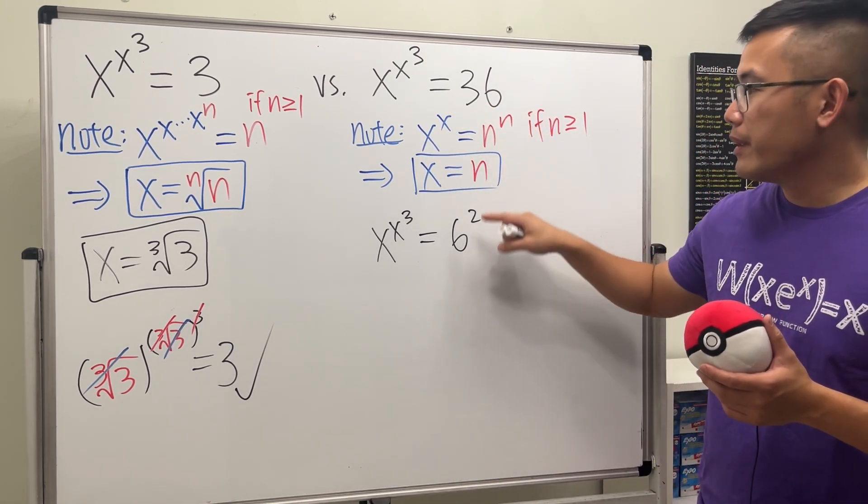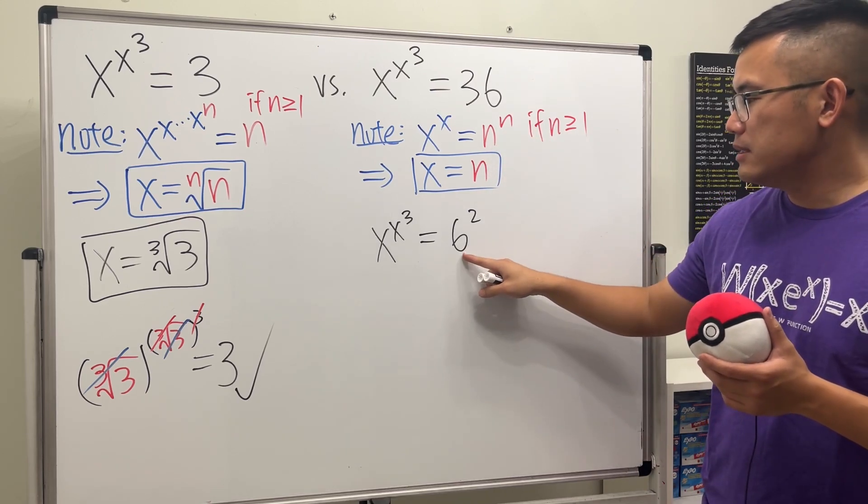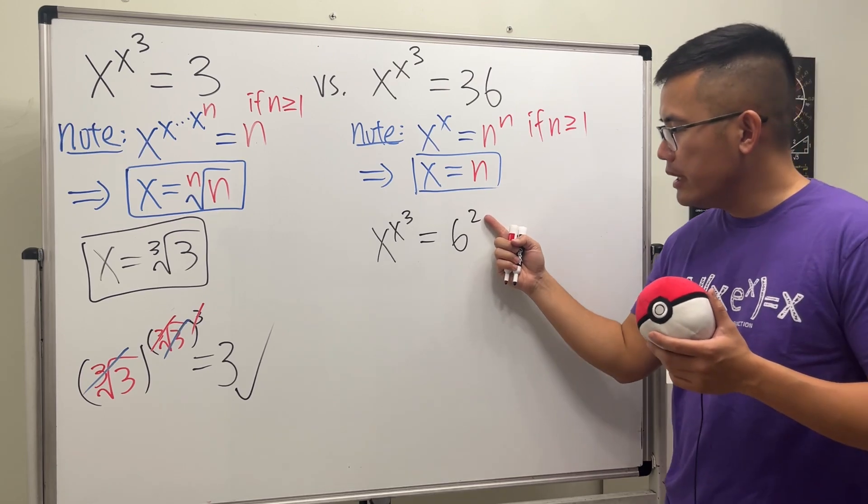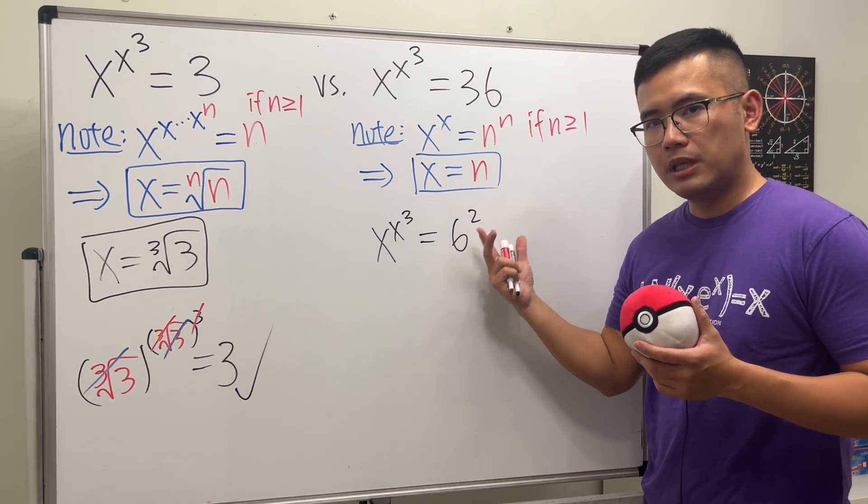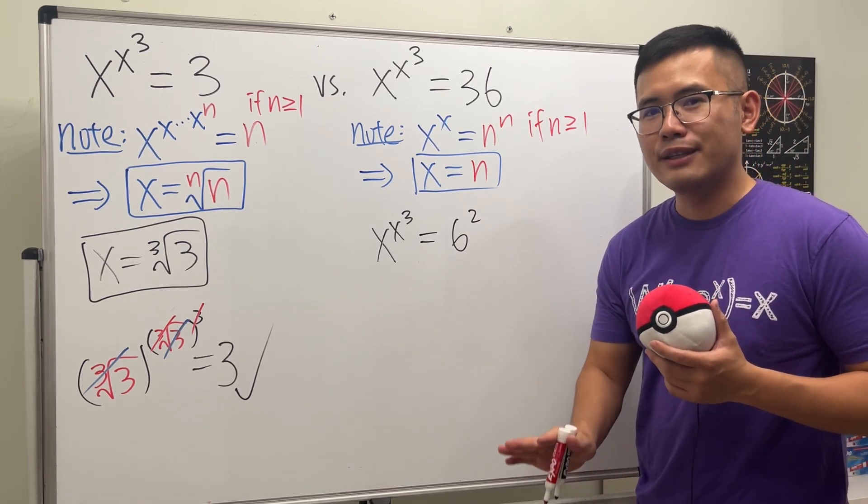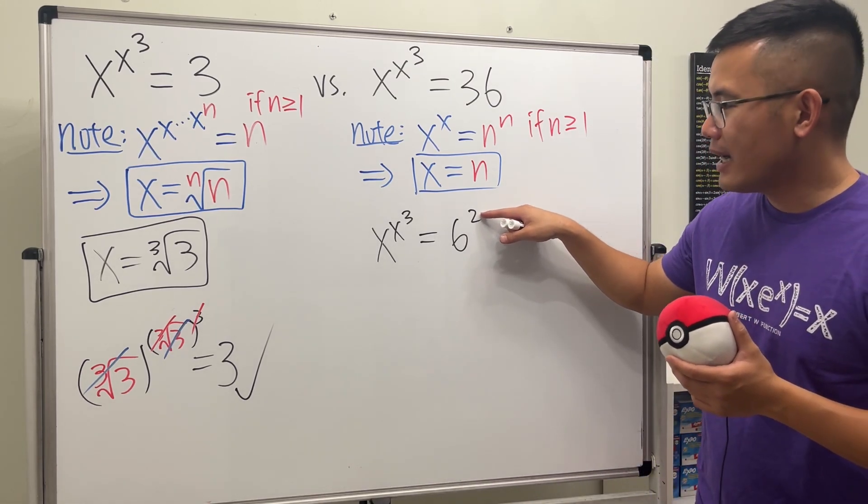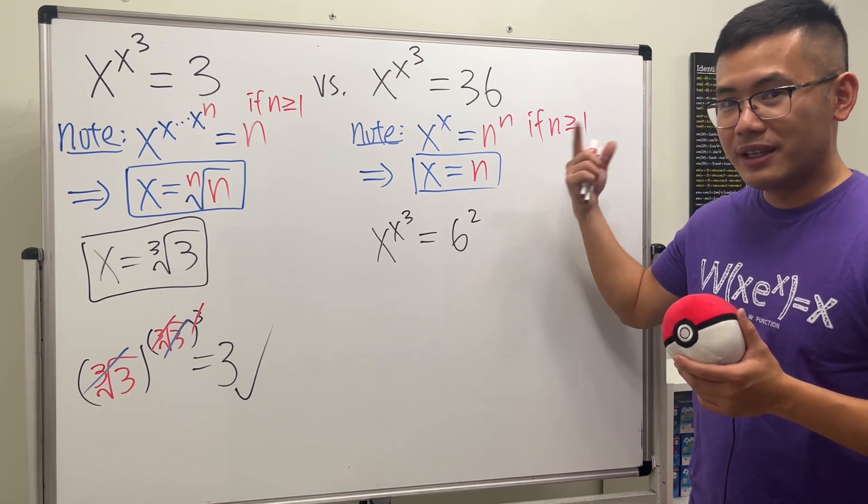But this has three parts. Oh my goodness, but let's just write it down and see what happens. This is not good because in order for us to use this, the base and the power have to be the same. This base is 6, the power here is only a 2.